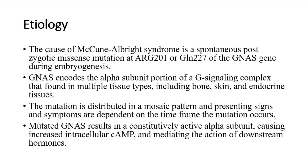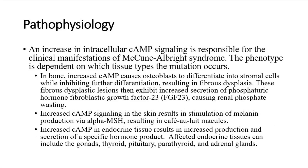GNAS encodes the alpha subunit portion of a G signaling complex found in multiple tissue types, including bone, skin, and endocrine tissues. The mutation is distributed in a mosaic pattern and presenting signs and symptoms are dependent on the time frame the mutation occurs. Mutated GNAS results in a constitutively active alpha subunit, causing increased intracellular cAMP and mediating the action of downstream hormones. An increase in intracellular cAMP signaling is responsible for the clinical manifestations of McCune-Albright syndrome.